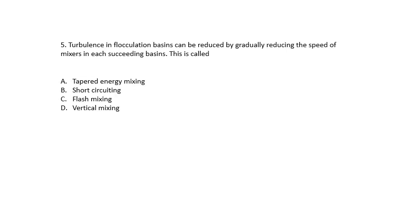Turbulence in flocculation basins can be reduced by gradually reducing the speed of the mixers in each succeeding basin. This is called tapered energy mixing, short circuiting, flash mixing, or vertical mixing. The answer is A, tapered energy mixing.